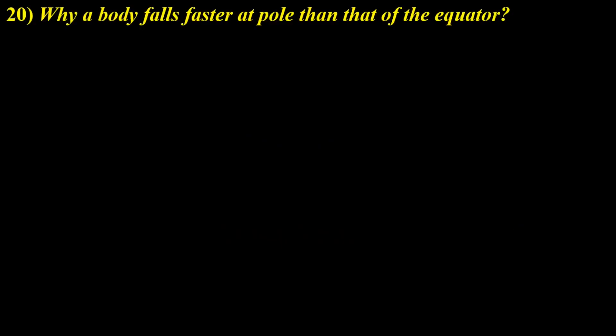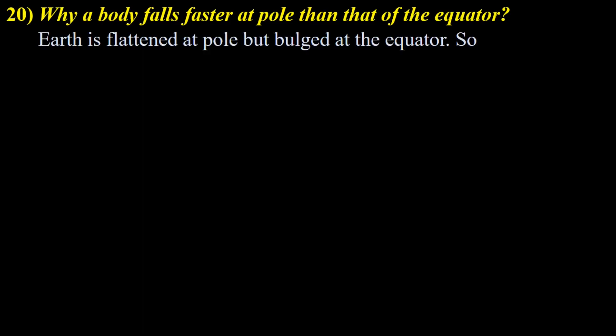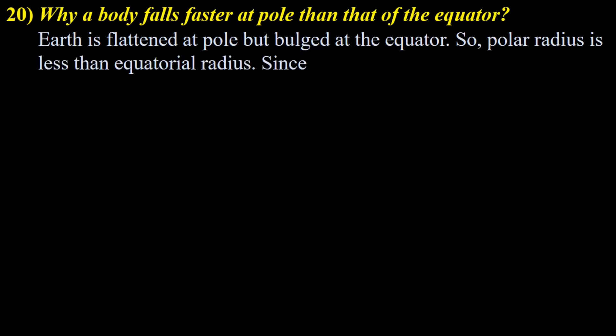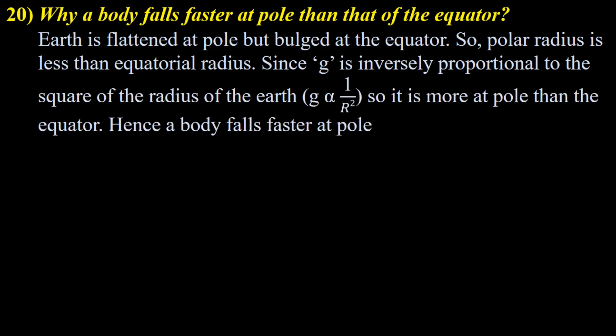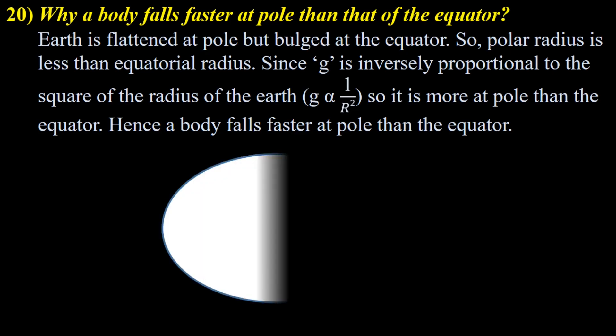Why does a body fall faster at the pole than at the equator? Earth is flattened at the pole and bulged at the equator, so polar radius is less than equatorial radius. Since g is inversely proportional to the square of the radius of the Earth, it is more at the pole than the equator. Hence, a body falls faster at the pole than the equator.